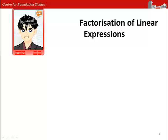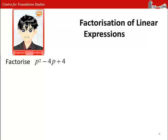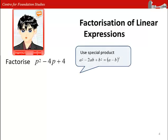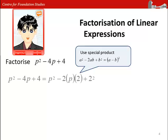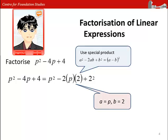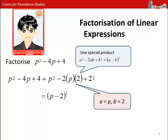Factorize p² - 4p + 4. By using this special product, we can write p² - 4p + 4 in the form p² - 2×p×2 + 2². From this expression, we can see that a = p and b = 2. Hence, the expression can be factorized into (p - 2)².